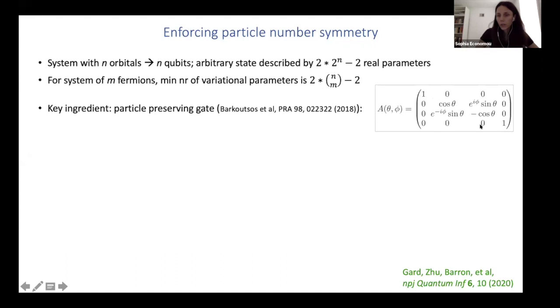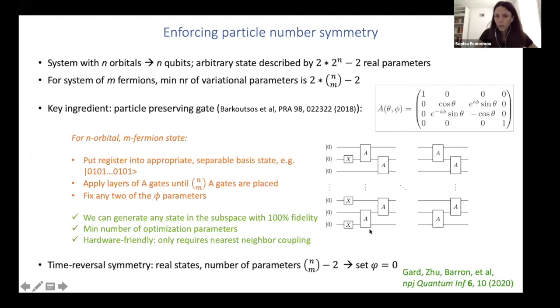So an ingredient here is this particle preserving gate. So if you look at this matrix here, this is in the 0 0 0 1 1 0 1 1 basis, this is designed to only mix 0 1 and 1 0. So it doesn't change the number of ones you have. And what we have done is we've come up with a circuit that is guaranteed to give you all possible states that have a given particle number symmetry, which you fix by fixing these X's in the beginning, these not gates and having this nearest neighbor gates from here.